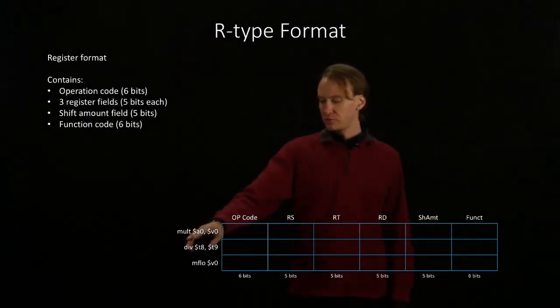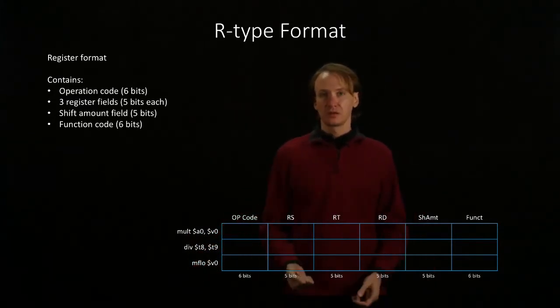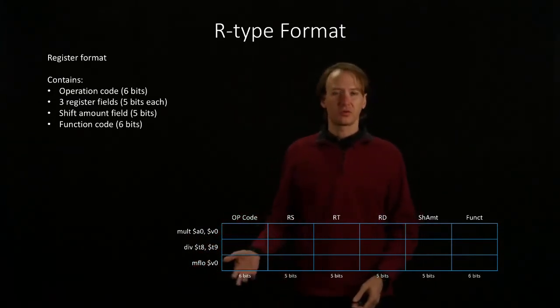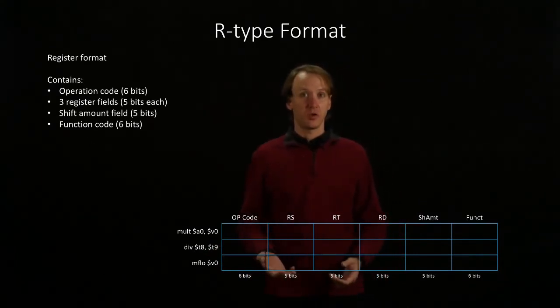This time we're going to be working with a multiply, a divide, and a move from low instruction. These are a little different in that they don't have three registers, so it may not be immediately obvious how we use them in an R-type format.